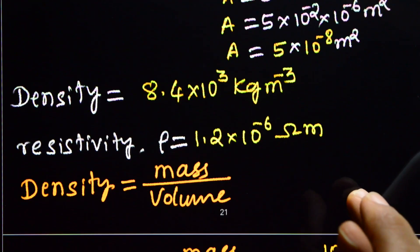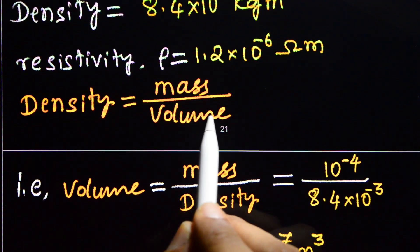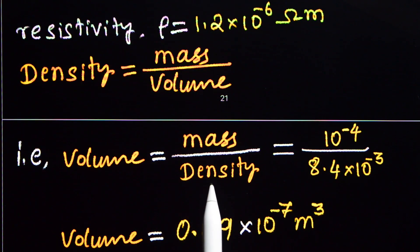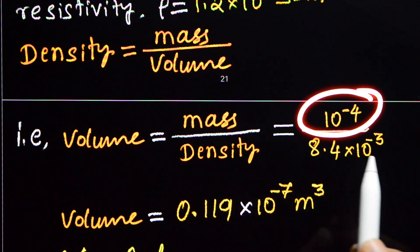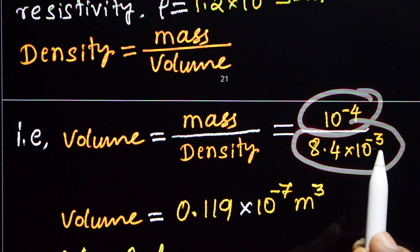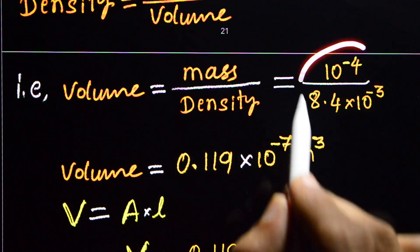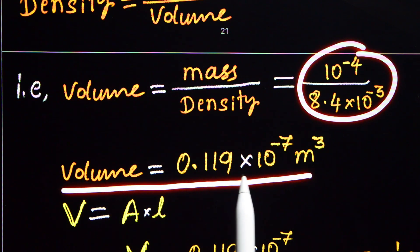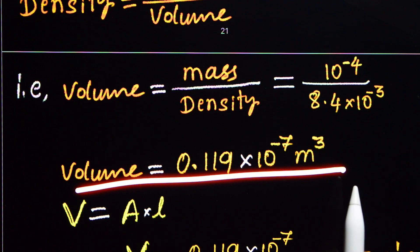Density equals mass divided by volume. Rearranging, volume equals mass divided by density. Mass is 10 raised to minus 4 kg, and density is 8.4 × 10³ kg per meter cube. On simplification, the volume is 0.119 × 10 raised to minus 7 meter cube. That is the volume of the nichrome wire.